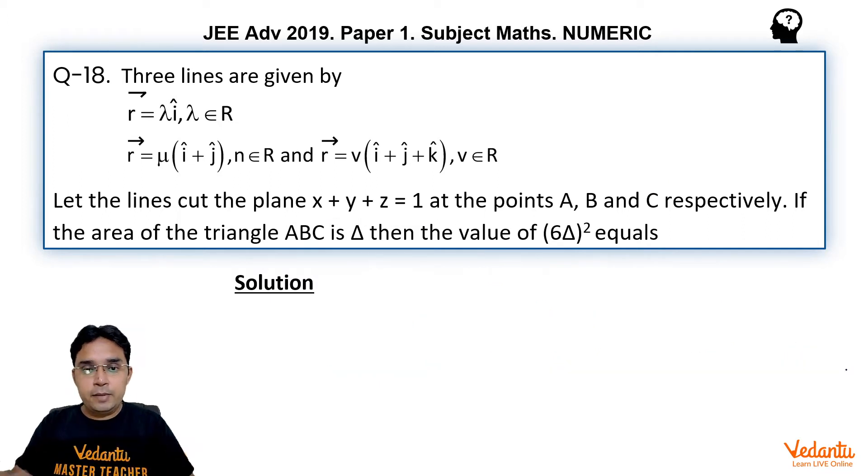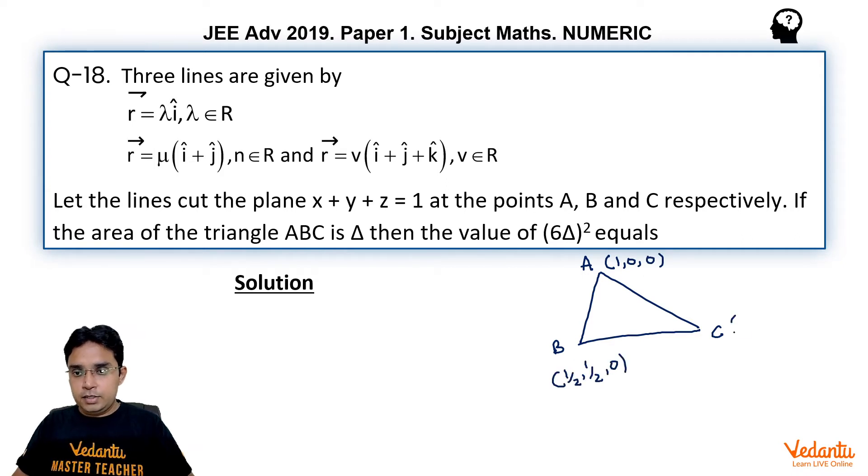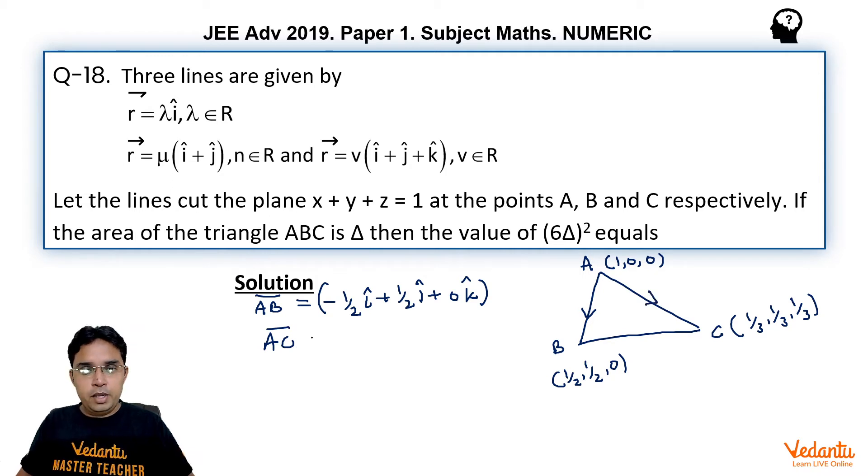Now to find the area of this triangle, let me draw this diagram A, B, C. A is 1 comma 0 comma 0, B is half comma half comma 0 and C is 1 upon 3 comma 1 upon 3 comma 1 upon 3. Now to find area of this triangle, I am writing these two vectors AB which will be minus half i cap plus half j cap plus 0 k cap. Similarly, AC vector also can be written, it would be minus 2 upon 3 i cap plus 1 upon 3 j cap plus 1 upon 3 k cap.